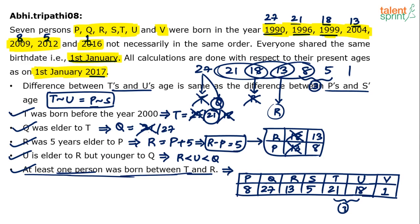So the final assignment is: P=8 years (born 2009), Q=27 years (born 1990), R=13 years (born 2004), S=5 years (born 2012), T=21 years (born 1996), U=18 years (born 1999), V=1 year (born 2016).